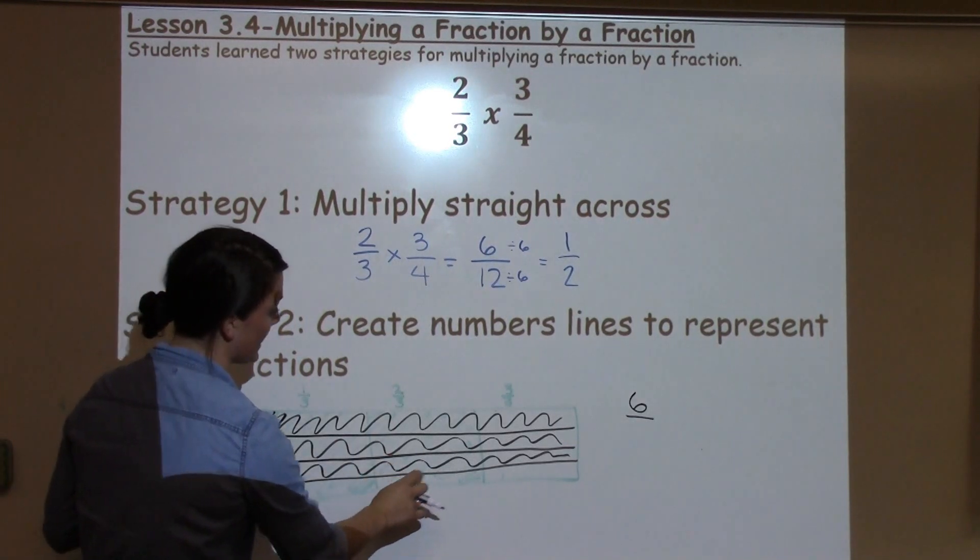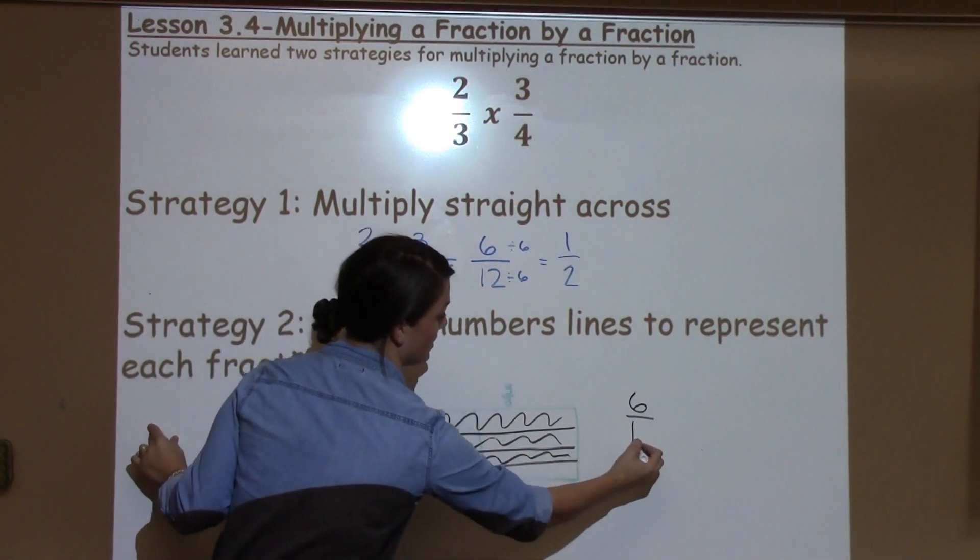And then I count up how many total spaces I have all together: 1, 2, 3, 4, 5, 6, 7, 8, 9, 10, 11, 12. 6 twelfths.